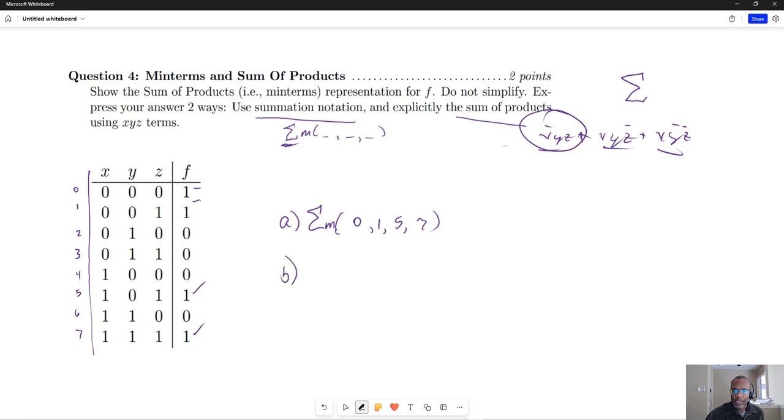And then, for part b, the sum of products notation, since we have four terms, that output, this function of x, y, and z, will have four terms.